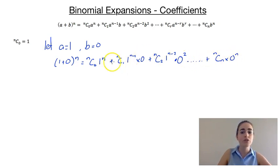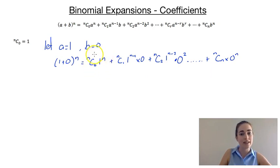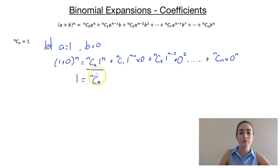Now because all of those terms, except that very first one, are going to have a b in them, and our b is 0, then all of these terms are going to be 0. We're just going to end up with nc0 times 1 to the n. We know that 1 to the power of anything is just 1, so that is just nc0. So we end up with 1 equal to nc0. That's the proof of our first coefficient.